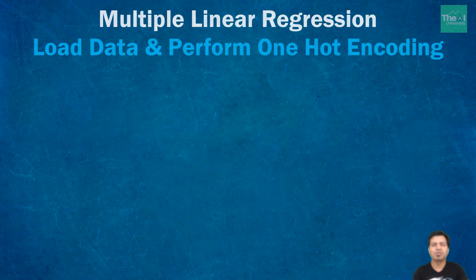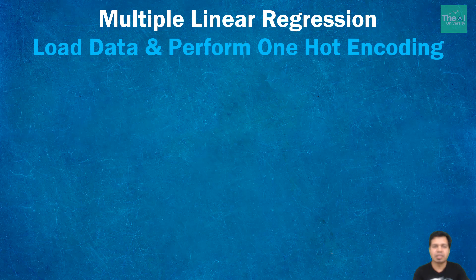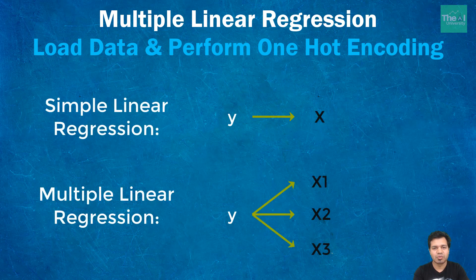In the previous video we learned about how to develop a simple linear regression model using both scikit-learn and Spark MLlib. We also learned about the dataset and the problem statement associated with multiple linear regression. In simple linear regression we had only one dependent variable and one independent variable, but in multiple linear regression we will have several independent variables.